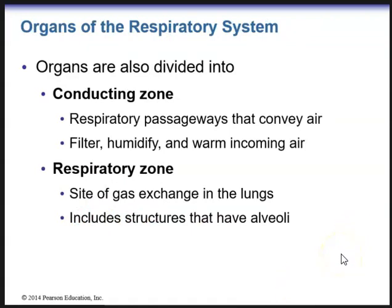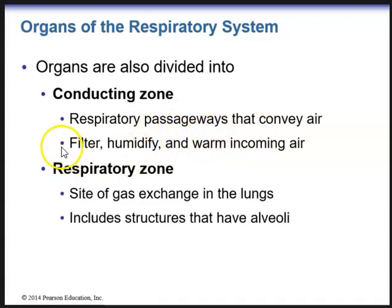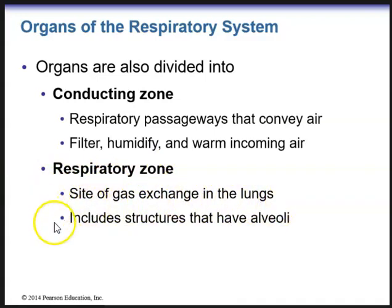We can also divide the respiratory system into zones. The first zone is the conducting zone — these are respiratory passageways that conduct and convey air, within which air is filtered, humidified, and warmed. The conducting zone begins with the nose and ends with the terminal bronchioles. The next zone is the respiratory zone, the site where gas exchange occurs. It includes structures with alveoli, beginning with the respiratory bronchioles and going down to terminal clusters of alveoli called alveolar sacs, which look like clusters of grapes.